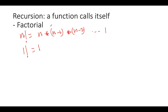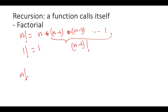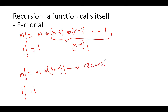Factorial of one is just one. Now I could define this formula recursively if I notice that this part of the formula is nothing but (n minus 1) factorial. So the recursive version of this formula is: n factorial equals n times (n minus 1) factorial. And factorial of one is just one. This is called the recursive case.